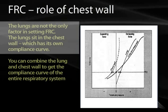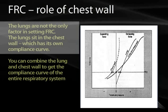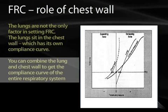Now instead of just looking at the lungs, let's look at just the chest wall. If you had a cadaver with the lungs taken out and looked at just the chest wall on its own, you can generate a compliance curve for just that chest wall — the amount of pressure it took to increase the volume of the chest wall. If you combine those two graphs together, you get the total compliance curve of the respiratory system — the lung plus the chest wall.